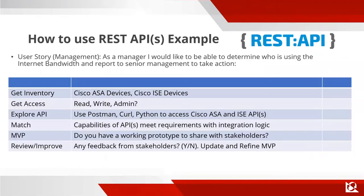When you want to use a REST API, here's the simple approach I take every time, based on a story — a request from management: 'As a manager, I'd like to determine who is using internet bandwidth and report that to senior management.' A simple request comes in through Jira. I'm going to build a script to get some information. First thing I need is inventory — what am I dealing with? Do I have access? If not, request it.